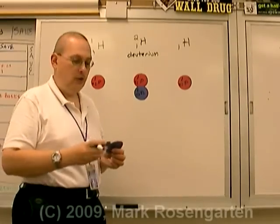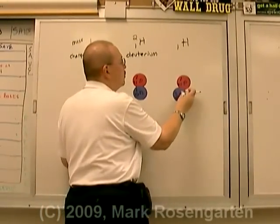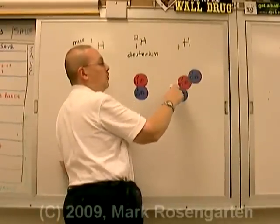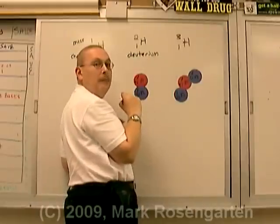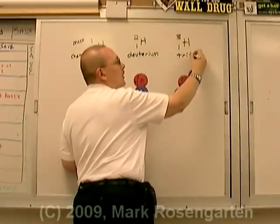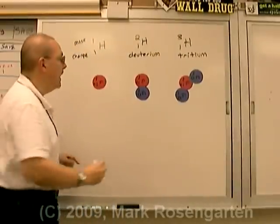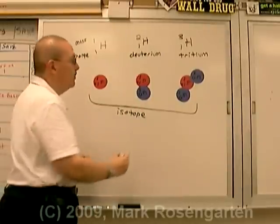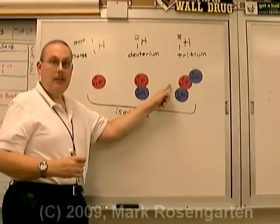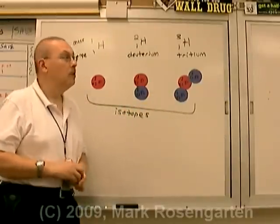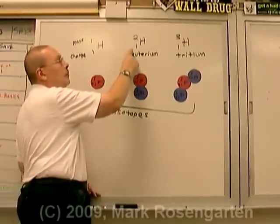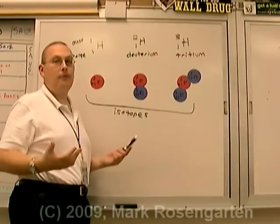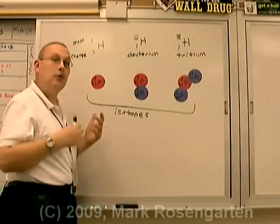The third form of hydrogen, or isotope, contains two neutrons in addition to the one proton. They have a combined mass of one, two, three atomic mass units per atom. This isotope is referred to as tritium. These are the three isotopes of hydrogen. The definition of isotopes are atoms of the same element with different numbers of neutrons. Notice they're all the same element. They all contain one proton, and therefore they're the same element. But the number of neutrons varies, therefore the mass varies as well. Those are isotopes.